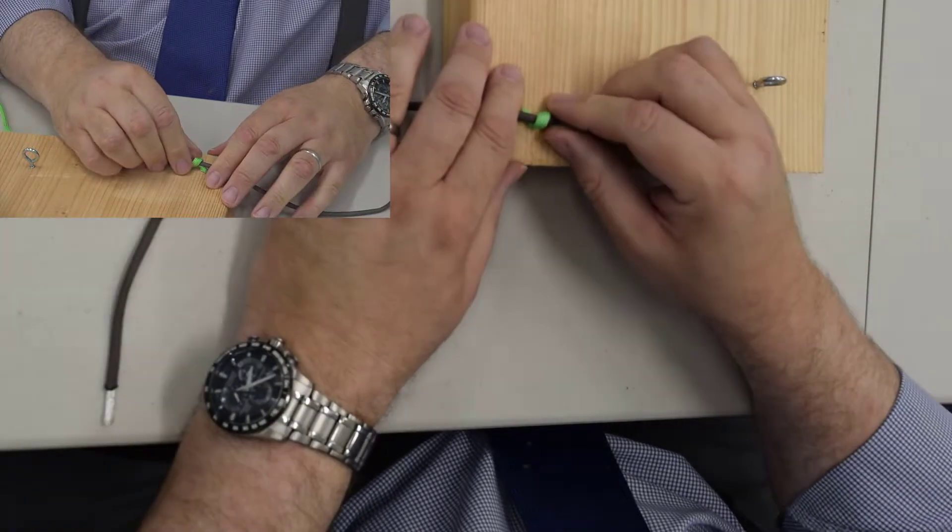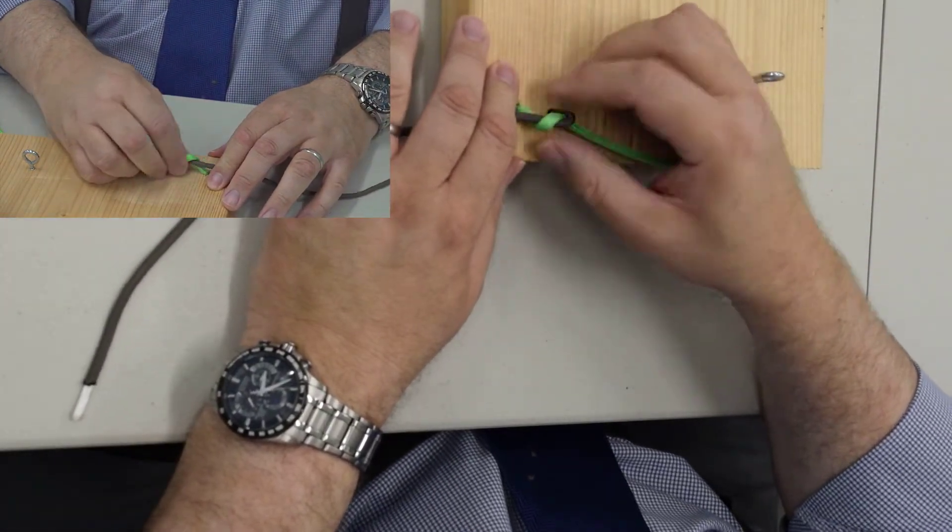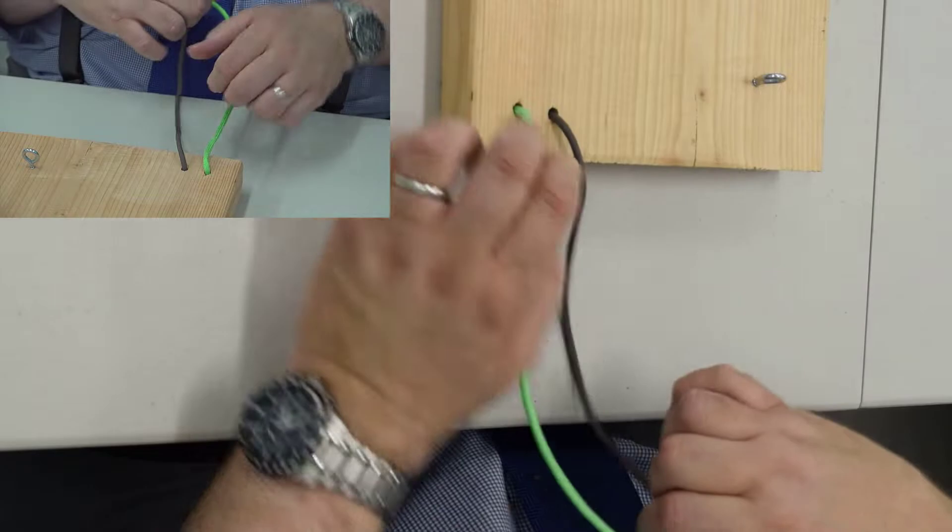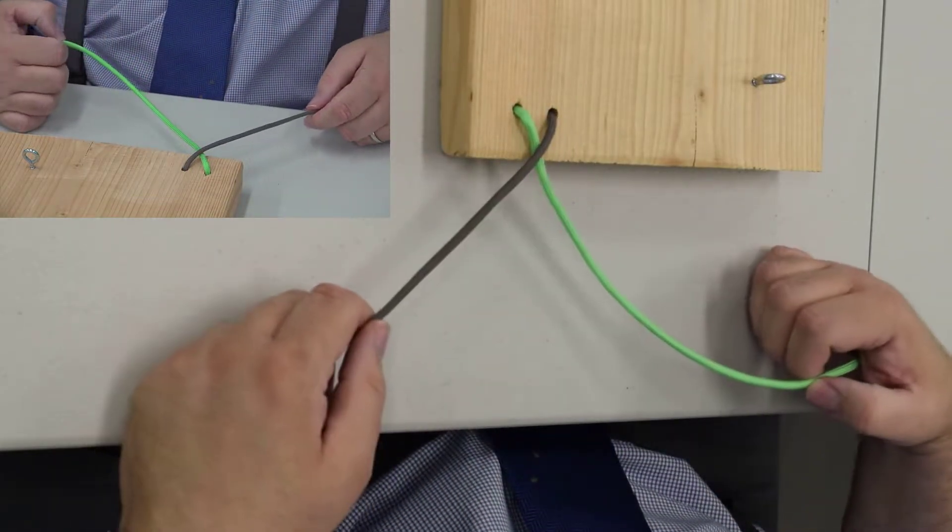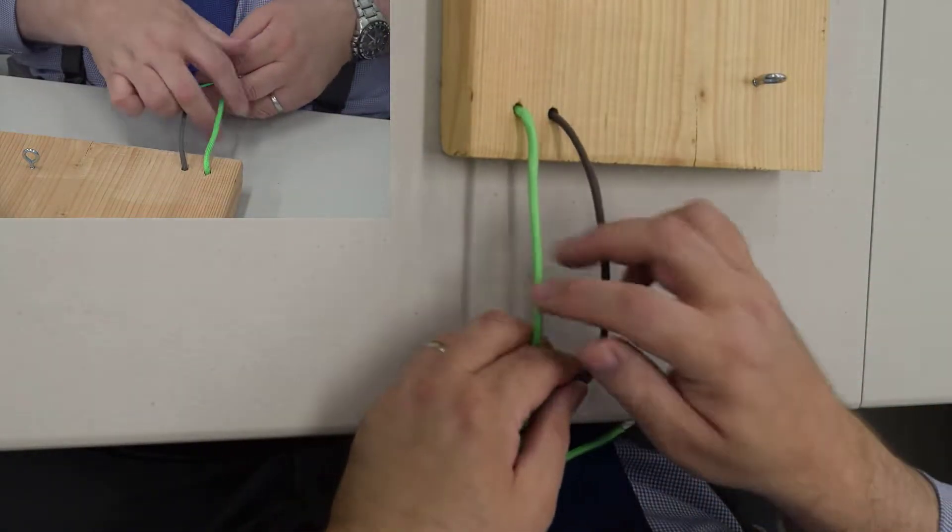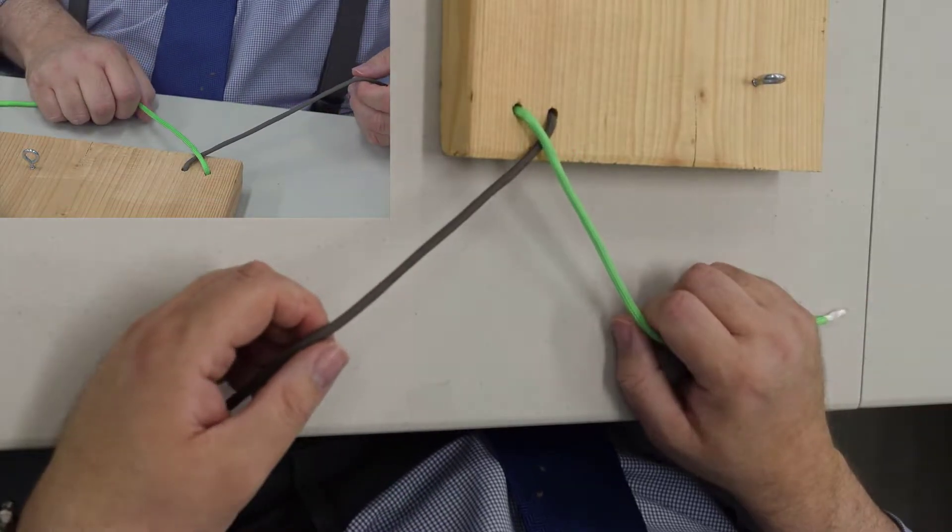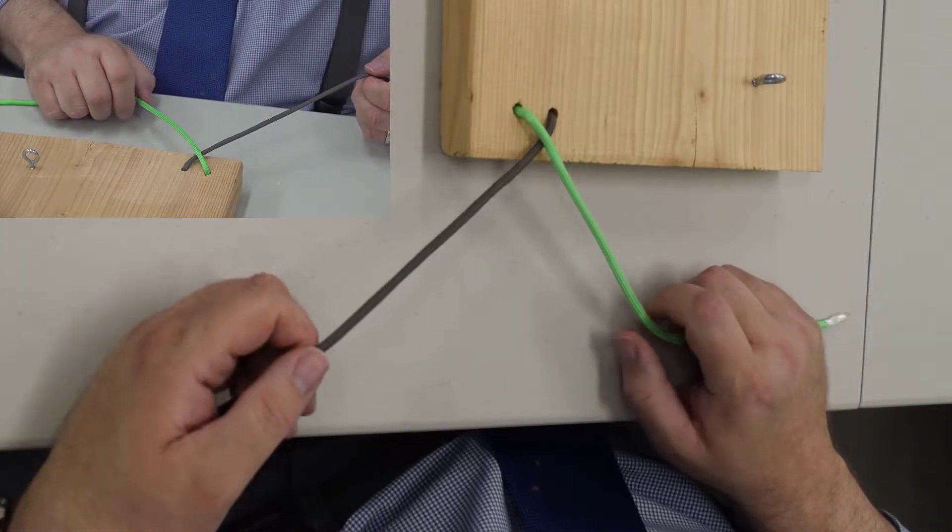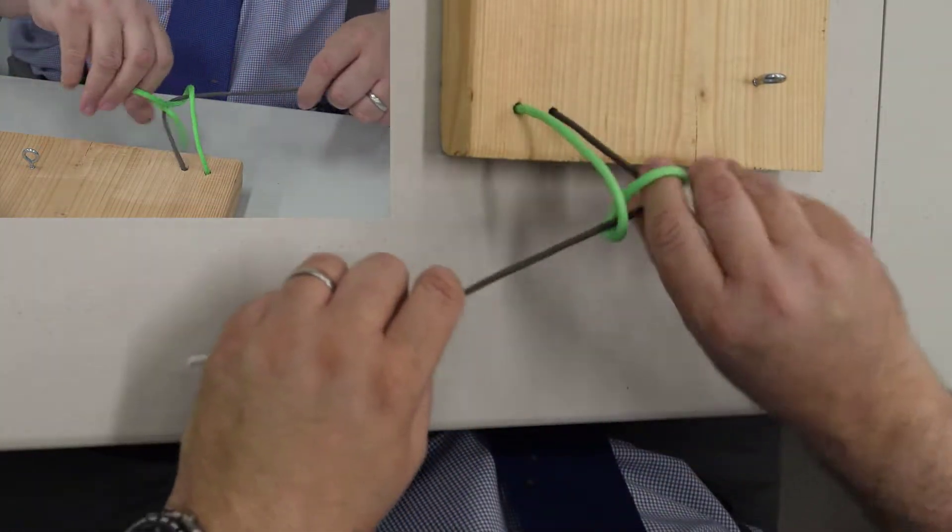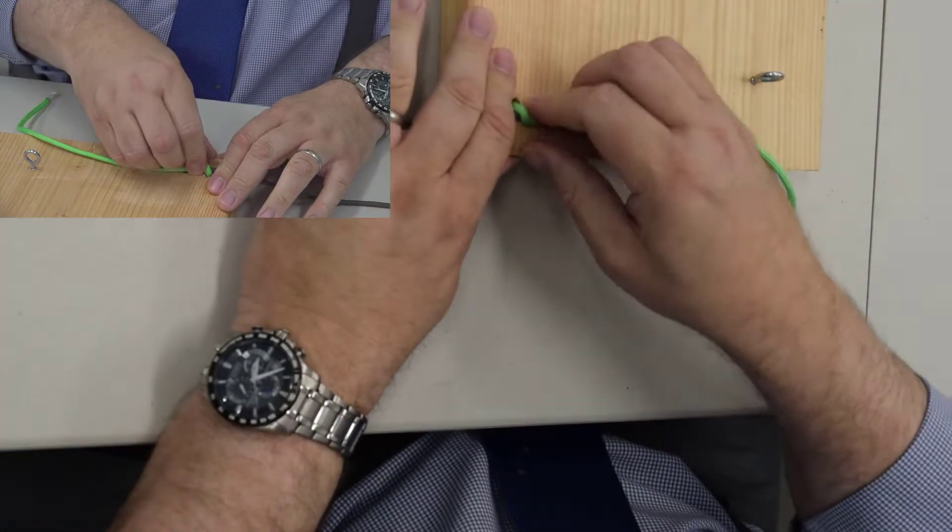So it does matter which one of your sutures is on top. It matters because it will determine what the first throw you make of the knot will be on the one-handed tie.